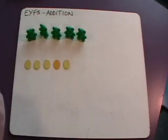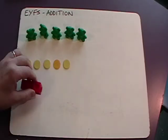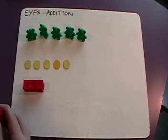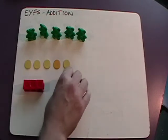We can do it with Multilink: three Multilink cubes and two Multilink cubes, bringing those together to make five again.